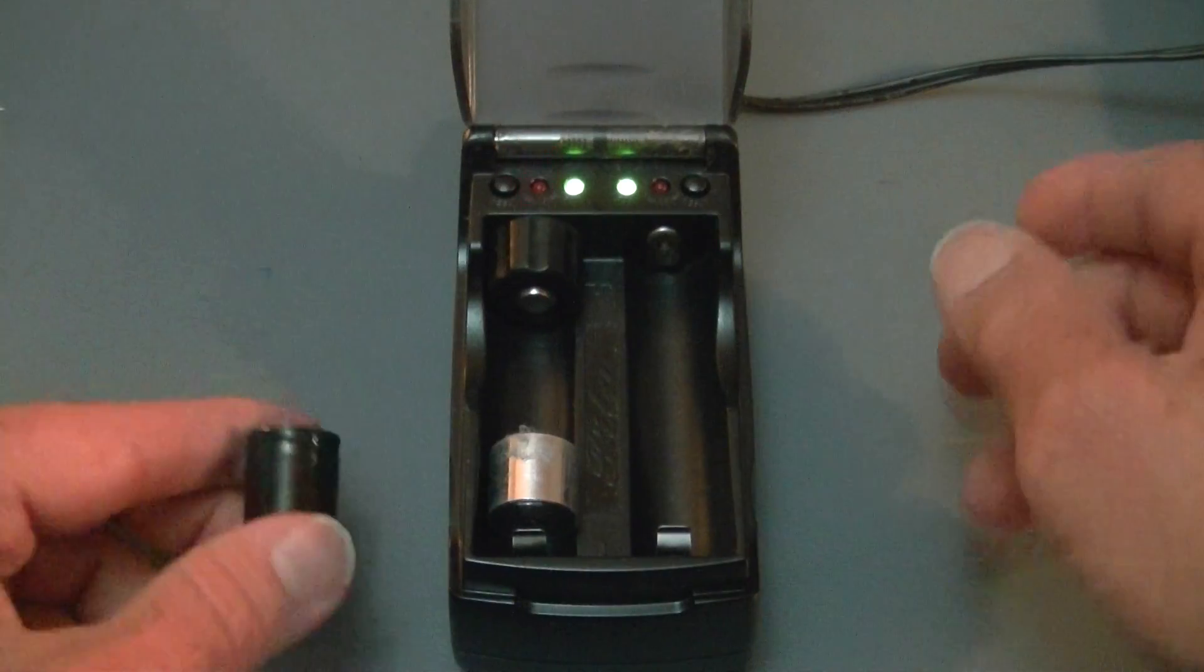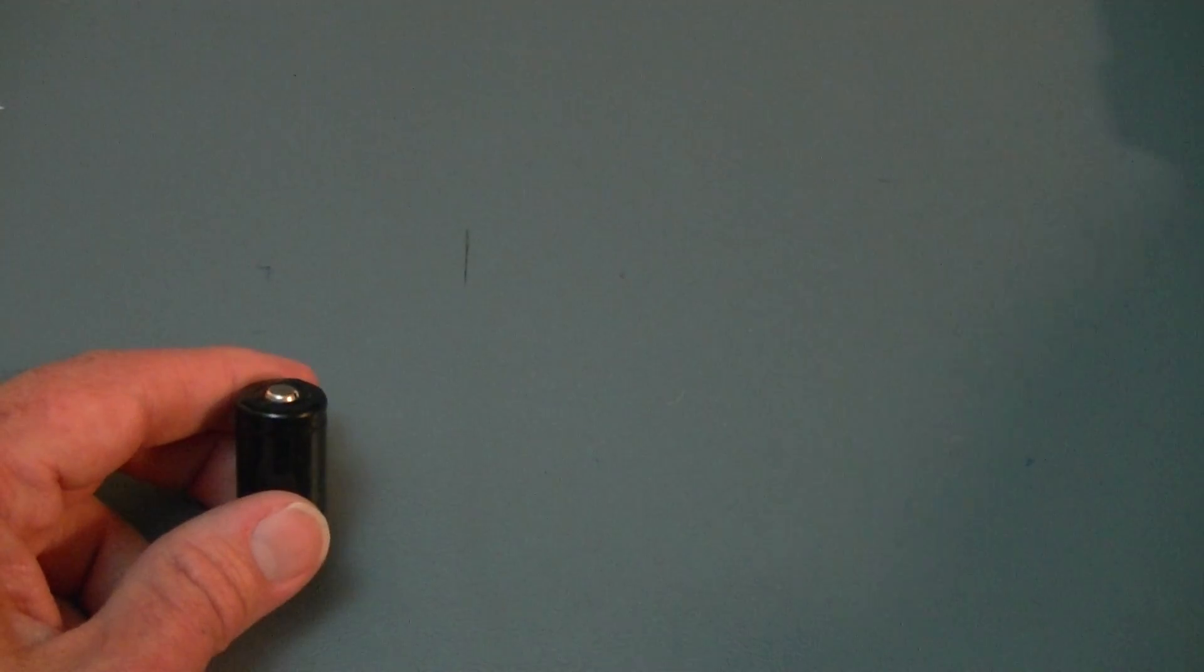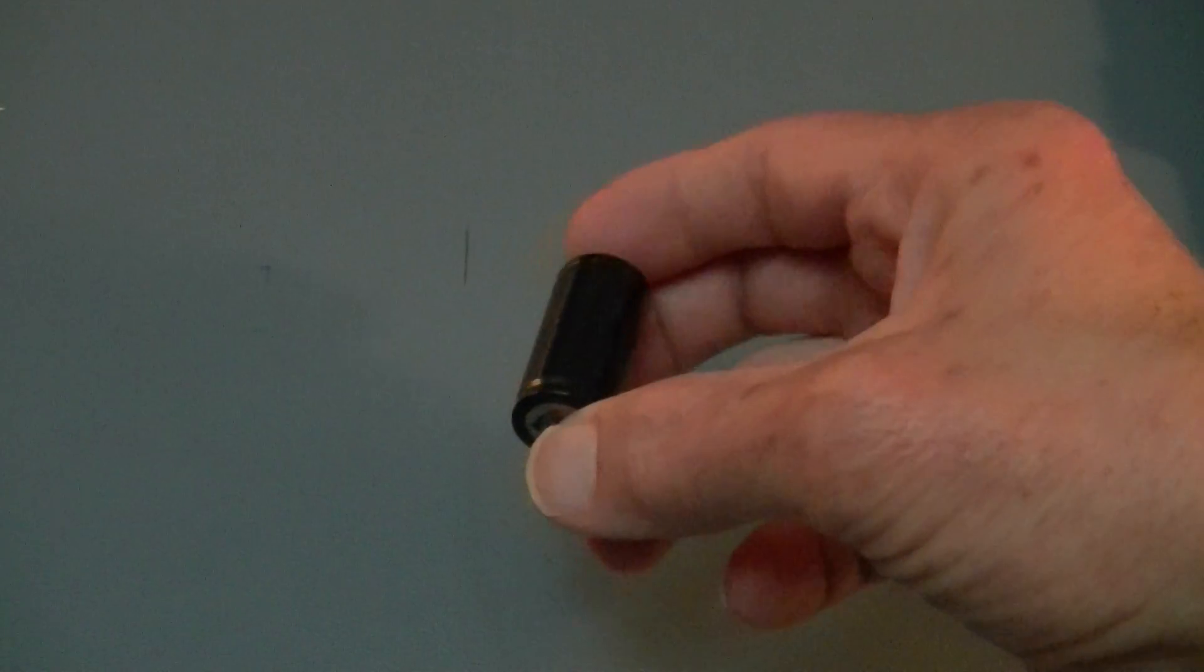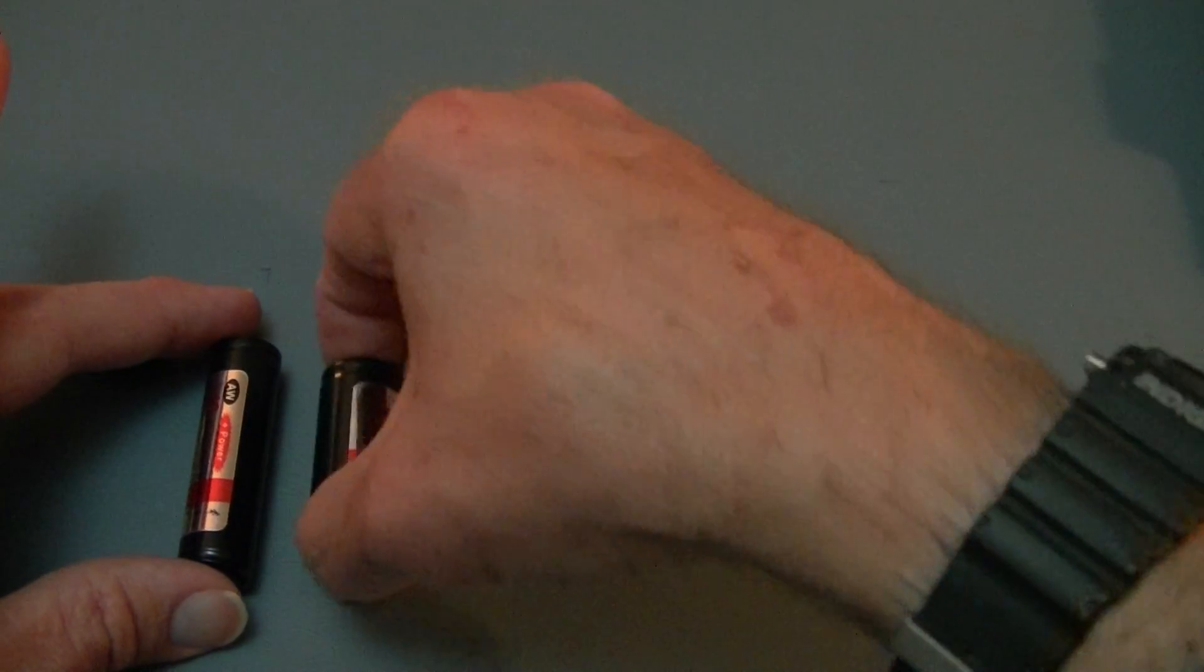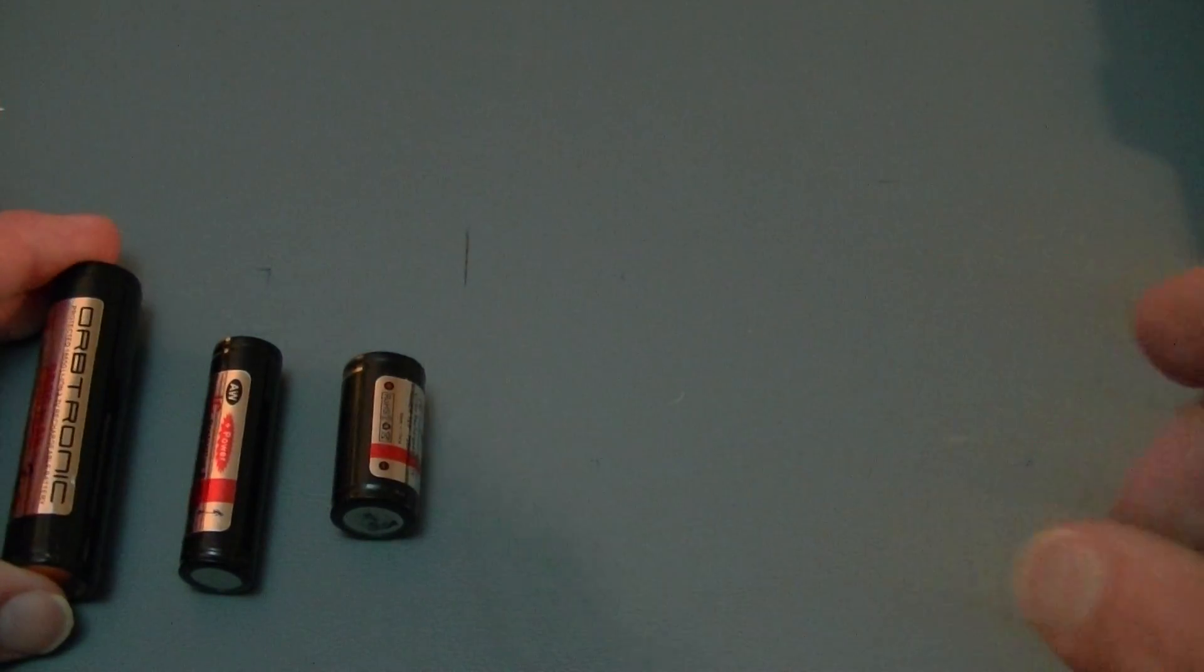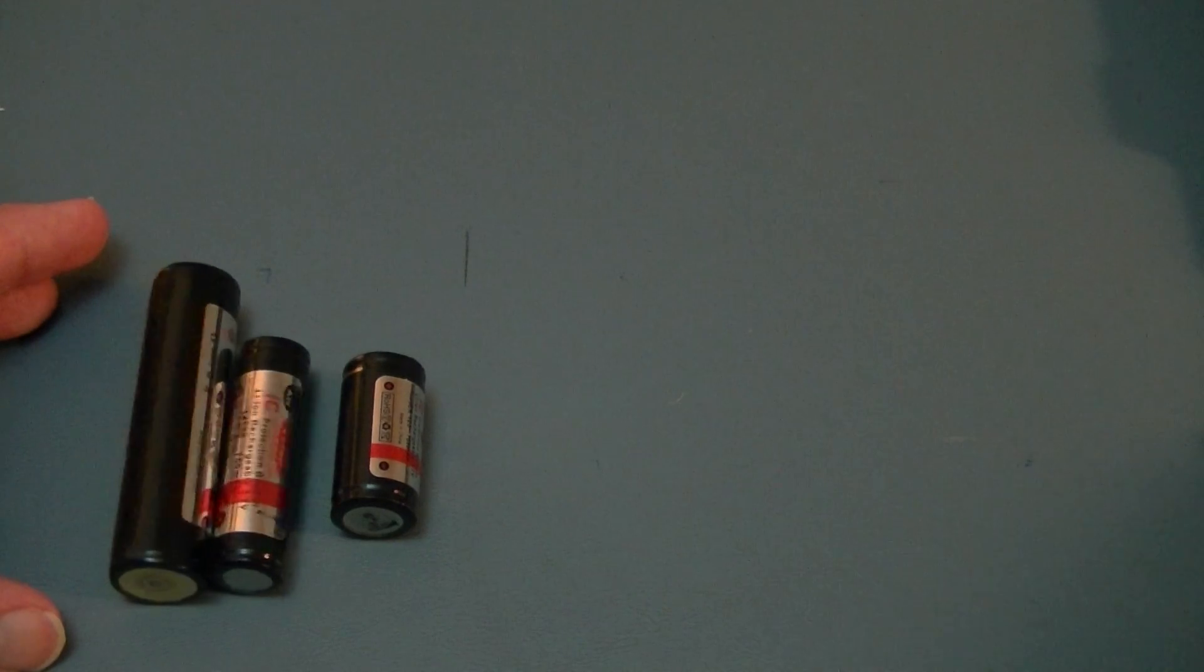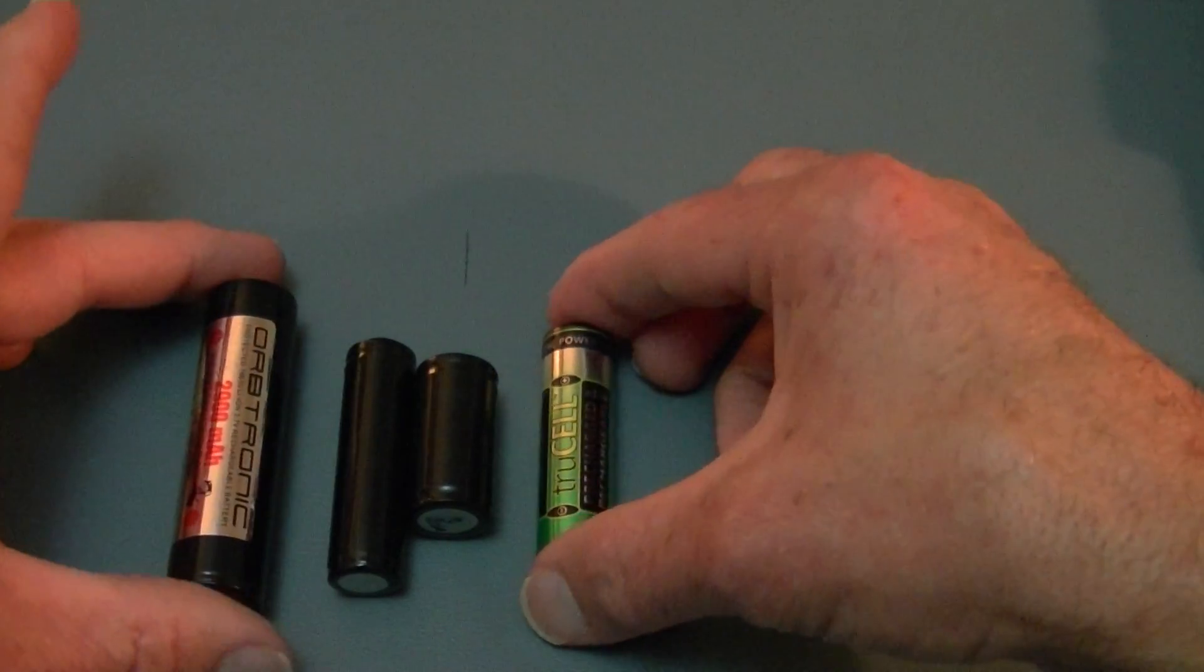So when you do look at chargers you might want to make a note that they do say that they utilize CC and CV algorithms. That's the constant voltage and constant current and that means that they do use a constant current and voltage when they charge and that's safer methods than some other chargers which do not use that particular type of algorithm and they can sometimes just not be as safe to charge.